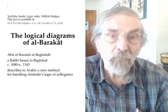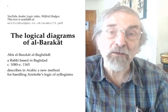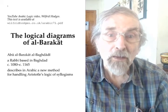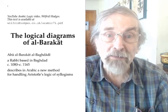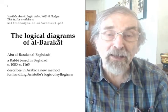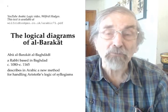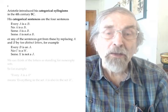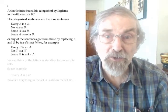What you probably haven't heard is that there were already excellent diagrams for doing Aristotelian logic several hundred years earlier than that. This talk is going to be about the diagrams proposed by a rabbi in Baghdad in the middle of the 12th century. His name was Abul Barakat al-Baghdadi — others called him al-Barakat for short. To explain his diagrams we will need to start with some slides on Aristotle's logic.